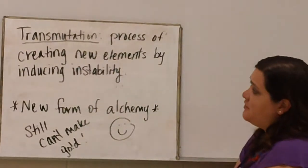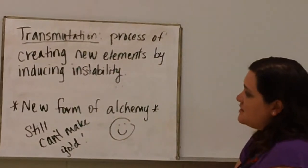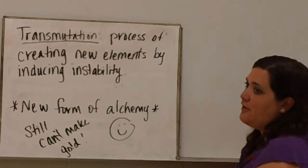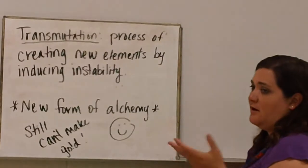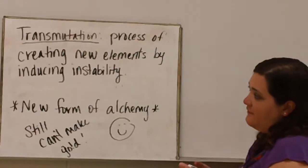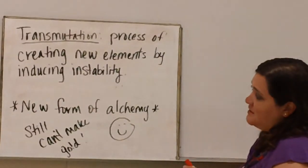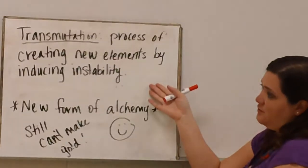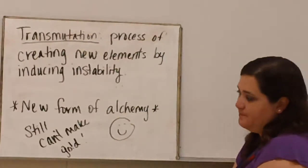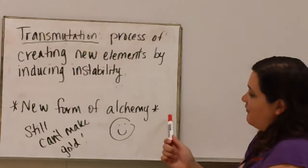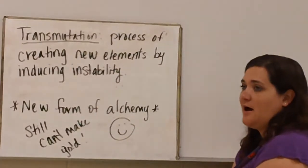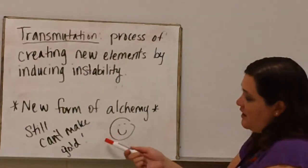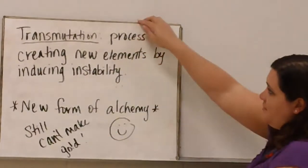Transmutation is the process of creating new elements by inducing instability. In other words, when we bombard neutrons to another atom to make it heavier, to make it more unstable, then we create new elements through this process of transmutation. This is a form of alchemy, if you will, if you remember from history class. Alchemists were trying to make gold. They still can't make gold, but they have learned how to make new elements.